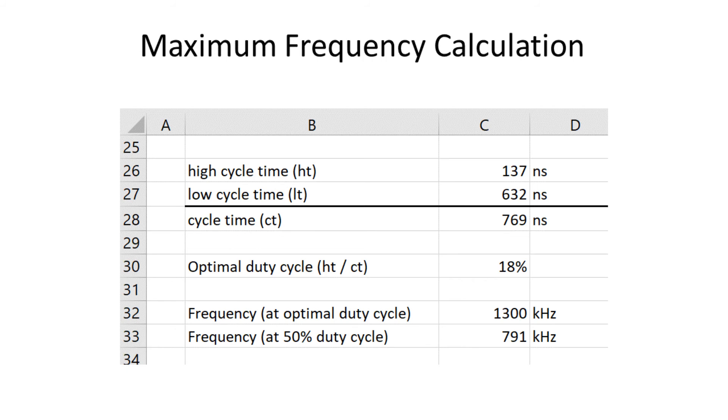But a typical clock like an oscillator has a 50% duty cycle. And so we have to stay with the longer time which is the low cycle time. And in this case with a 50% duty cycle the optimal clock would be 791 kHz or about 0.8 MHz.